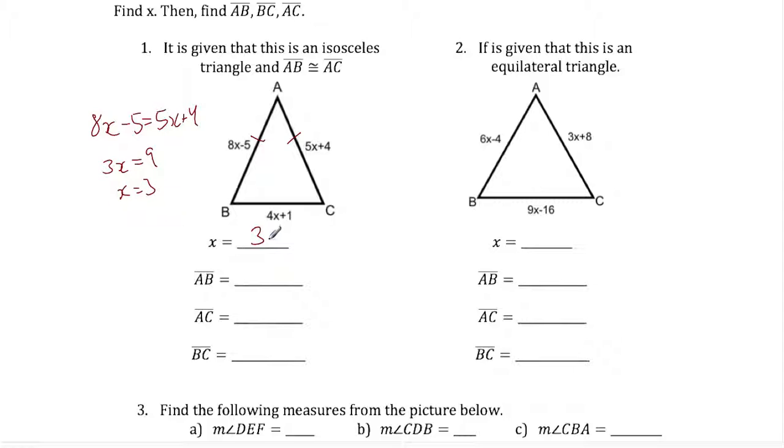Plugging x equals 3 into all the sides, for AB we're going to have 8 times 3 which is 24 minus 5 is 19. If we did this correctly AC should be the same length but we'll check just to make sure. 5 times 3 is 15 plus 4 is also 19. So that works out. And side BC should be 4 times 3 which is 12 plus 1 is 13.